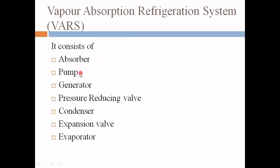In the Vapor Absorption Refrigeration System there are a number of parts: the absorber, pump, generator, pressure reducing valve, condenser, expansion valve, and evaporator. If you closely observe, these four parts — the absorber, pump, generator, and pressure reducing valve — are new as compared to the Vapor Compression Refrigeration System, which has the condenser, expansion valve, and evaporator, plus a compressor.